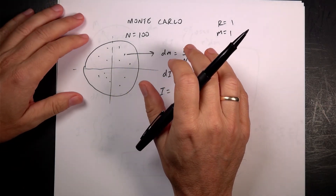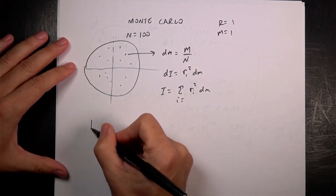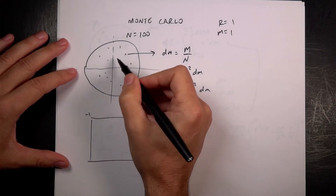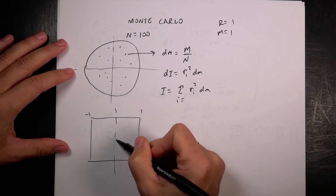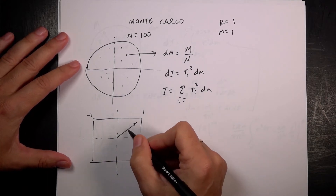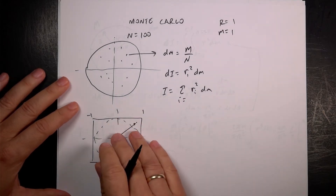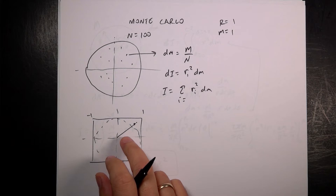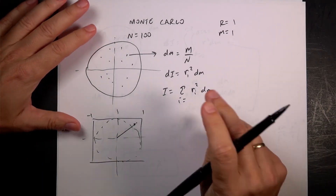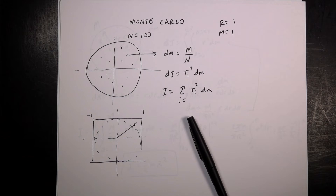The Monte Carlo method uses random numbers to get these pieces. I generate points in a box from negative 1 to 1 — that gives a radius of 1. Then I calculate the distance of each point from the origin. If that distance is less than R, the point is inside the circle and I keep it; otherwise I throw it away. At the end I have random points distributed over the circle, and then I calculate the moment of inertia of each and add them up. We'll do this in Python using the random function.